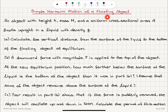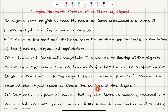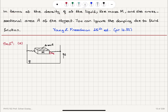Simple harmonic motion of a floating object. An object with height h, mass M, and uniform cross-sectional area A floats upright in a liquid with density rho. Part A: calculate the vertical distance from the surface of the liquid to the bottom of the floating object at equilibrium. Part B: a downward force with magnitude F is applied to the top of the object — at the new equilibrium position, how much farther below the surface is the bottom of the object than in part A? Assume some of the object remains above the surface. Part C: calculate the period of the resulting simple harmonic motion in terms of rho, M, and A, ignoring damping due to fluid friction.